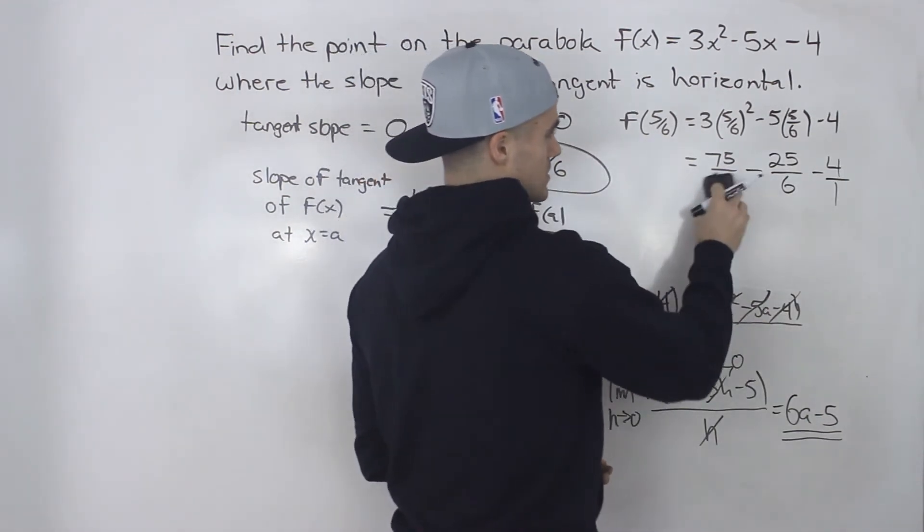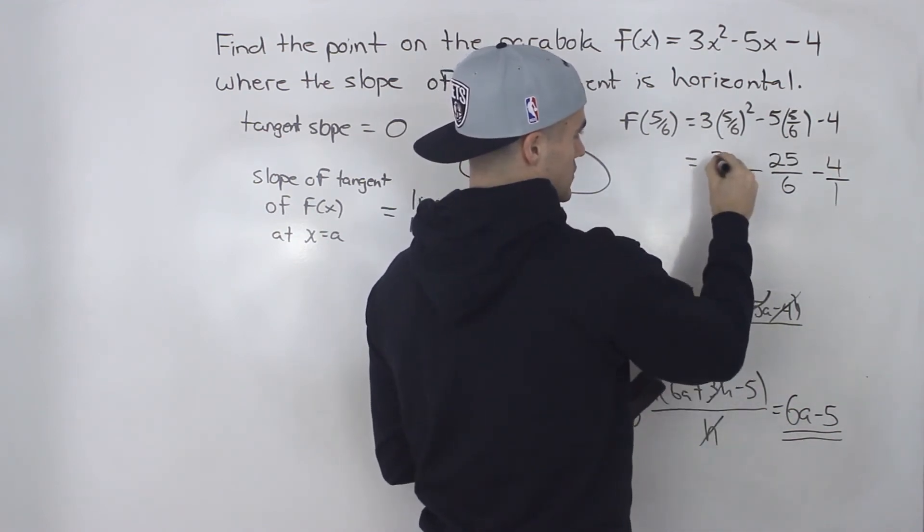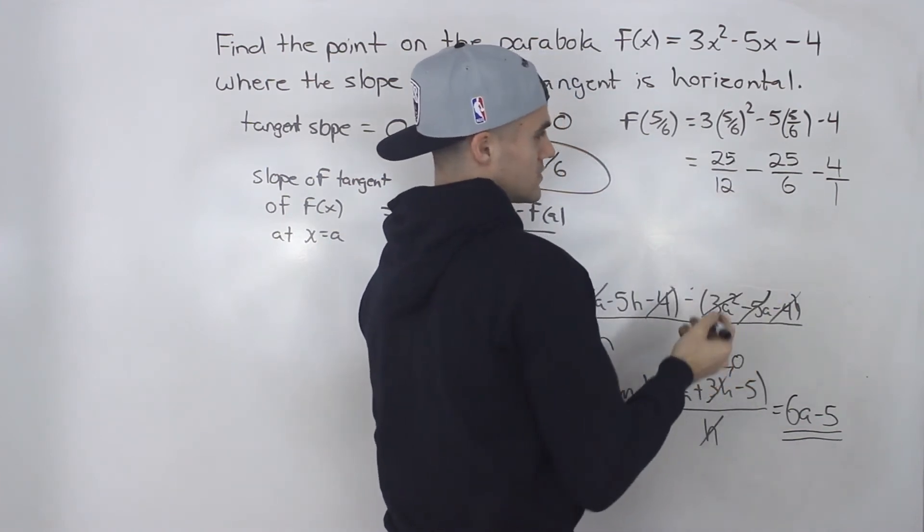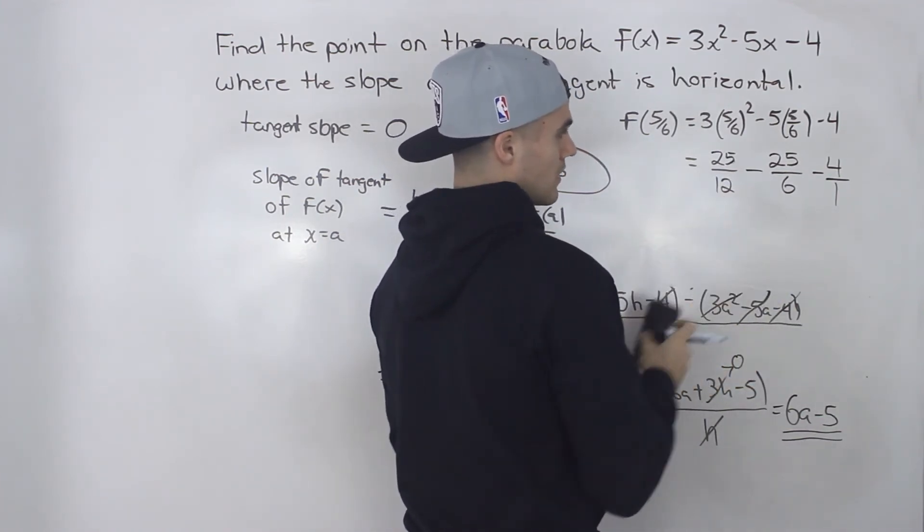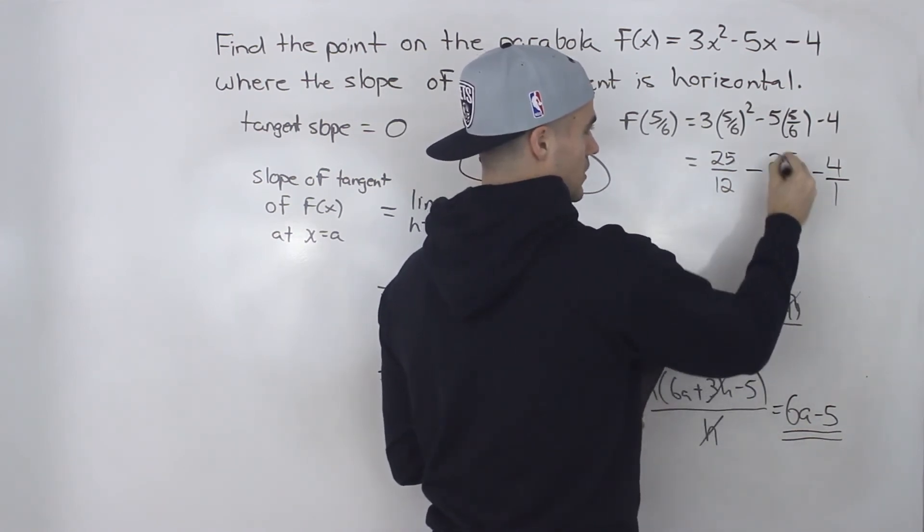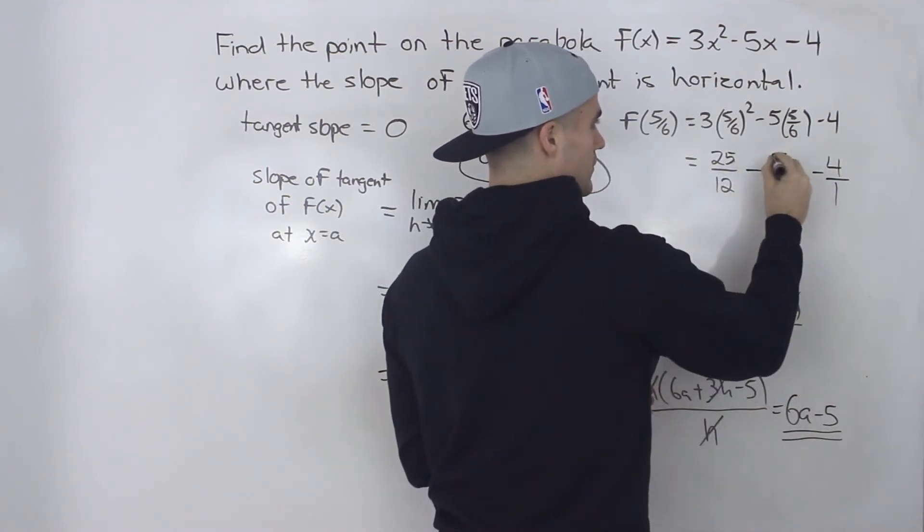Now there's 75/36. We can actually reduce this. So this would be, if we divide everything by 3, this would be 25/12. So now we just got to get a common denominator of 12. So multiplying that by 2, multiplying the top by 2, we get 50 up here.